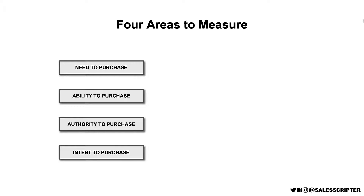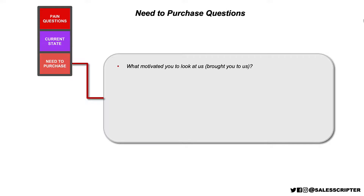These may sound like a lot of areas to figure out, but here are questions for each area. For need to purchase: What motivated you to look at us? Do you mind if I ask why you took time out of your schedule to meet with us? These questions help you get the prospect to say in their own words why they're interested. You may know why your software is great, but get the prospect to tell you why they're taking time to talk to you.